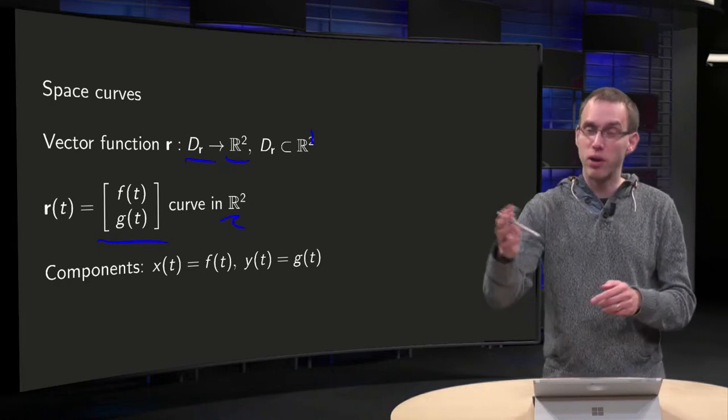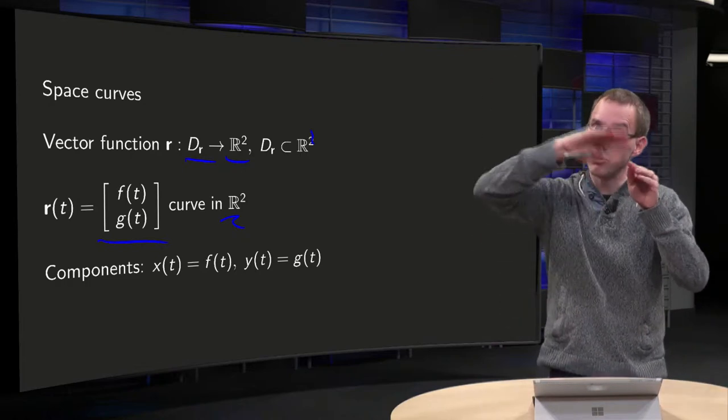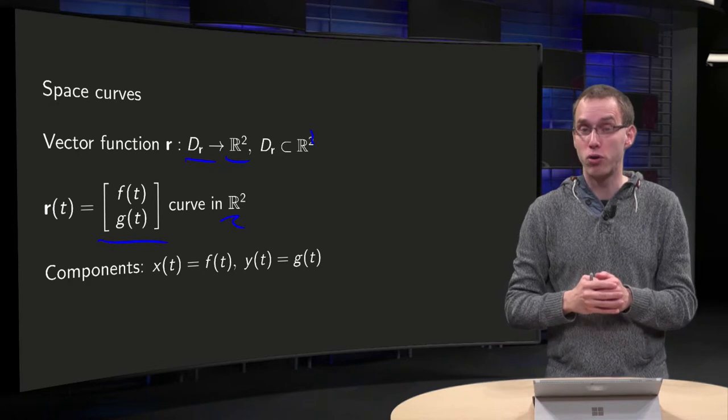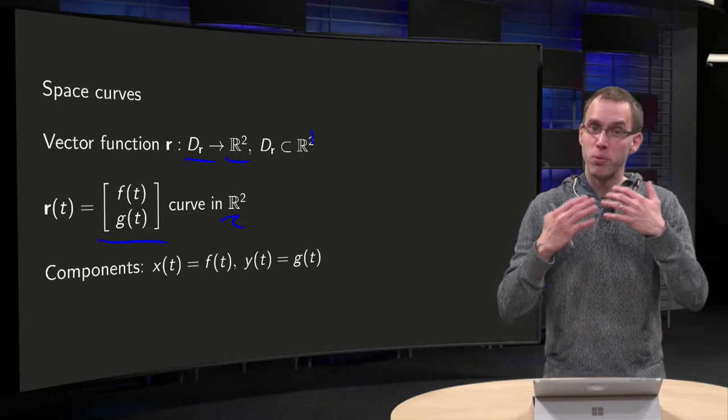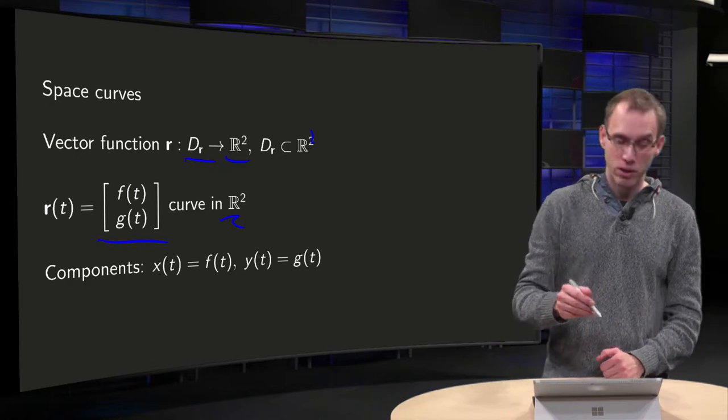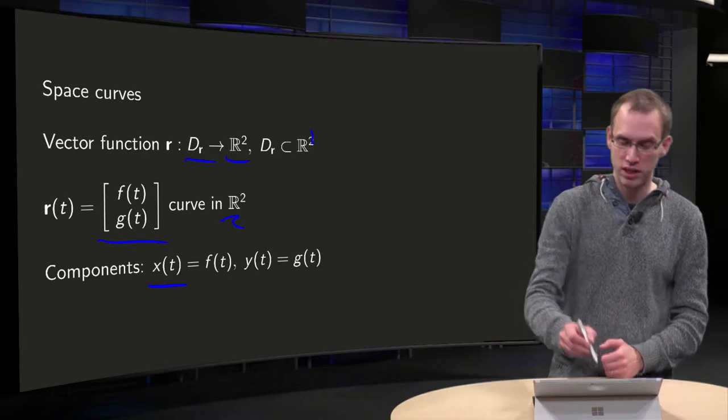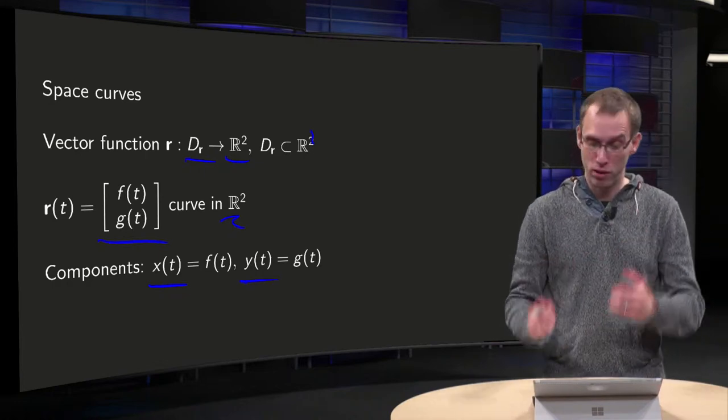So if we let T run, we get all kinds of points, F of T, G of T for all values of T. And together they will form a curve in R2. So we will interpret our vector function as a space curve. The components F of T will be the x-coordinate of our function and G of T will be the y-coordinate of our curves.